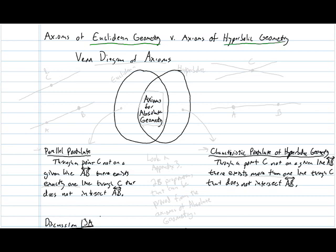We're going to talk about a geometry called hyperbolic geometry, and the distinction between these is really just a single axiom. In this Venn diagram here, the circle on the left represents the axioms for Euclidean geometry, and the circle on the right represents the axioms of hyperbolic geometry.